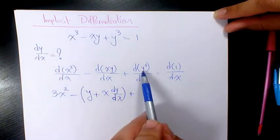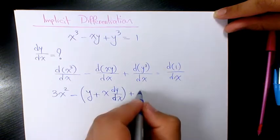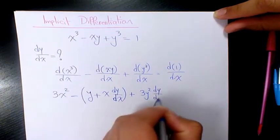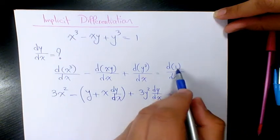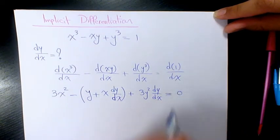Plus derivative of y³ with respect to x is going to be 3y² dy/dx, equals to derivative of 1 with respect to x which is zero.